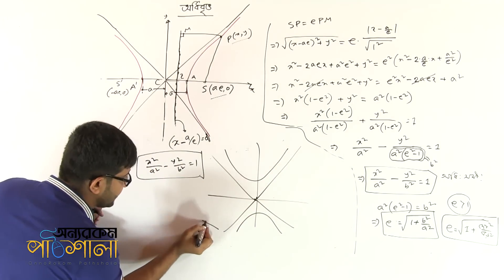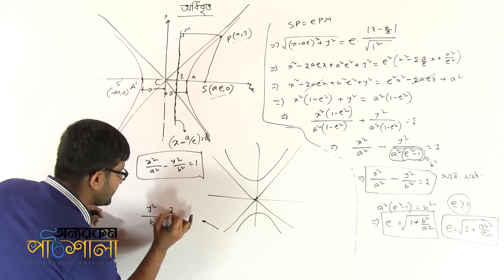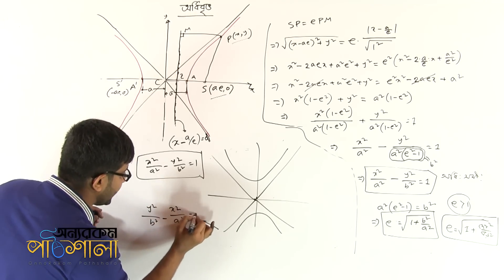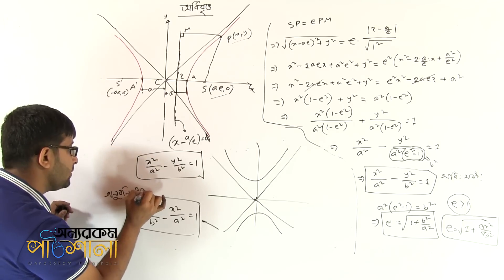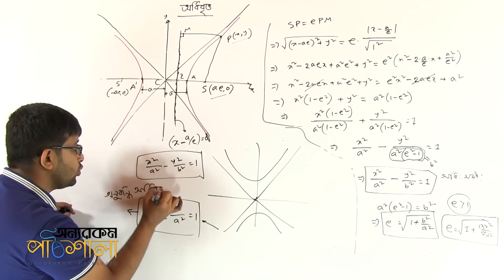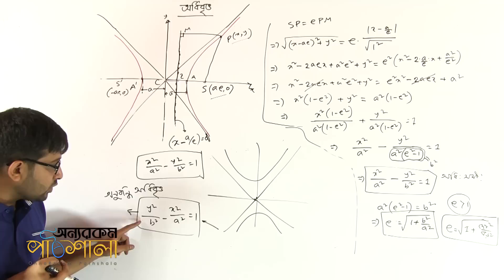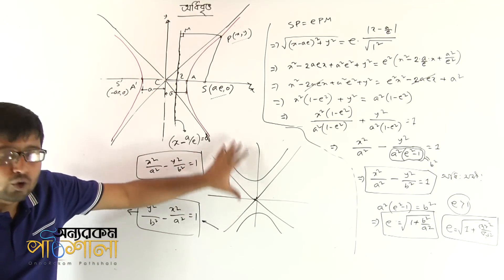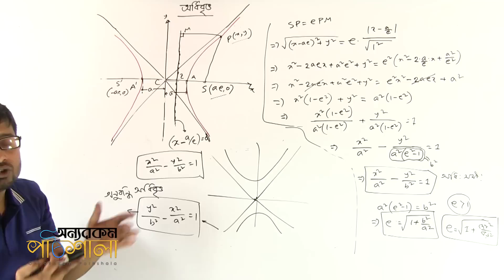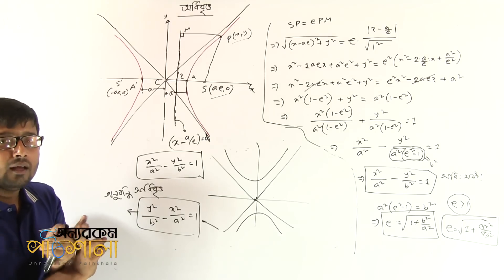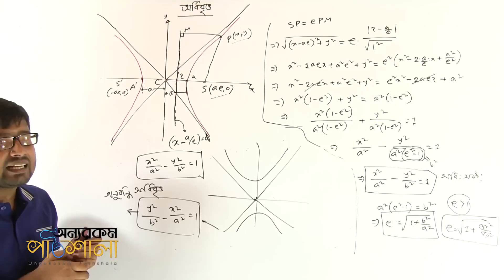This equation has y in front. y squared by b squared minus x squared by a squared equals to 1. This is the conjugate hyperbola equation, where y is in front. This is called the conjugate hyperbola, where the transverse axis is along y.